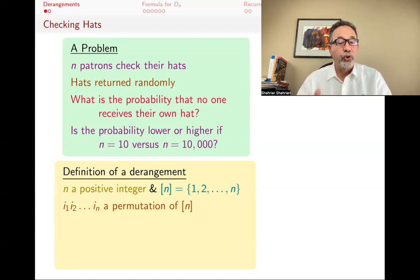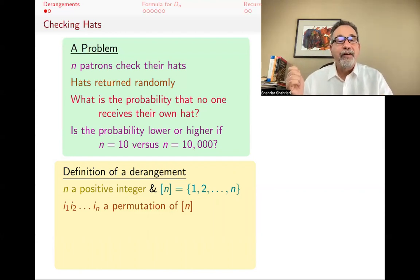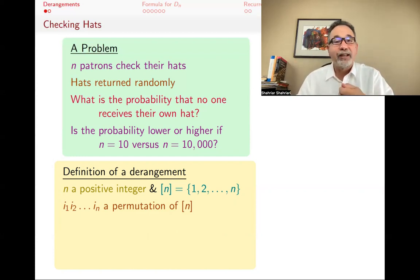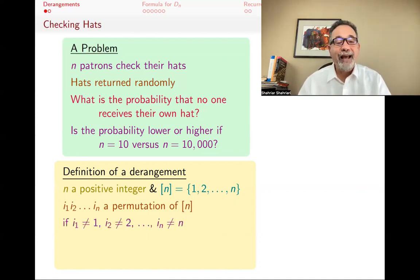A permutation — so we have person one, person two, person N. When we return the hats, we are going to give the fifth person's hat to the first person, the sixth person's hat to the second person, the third person's hat to the third person, and so on. So returning the hats is just going to be a permutation of 1 through N.